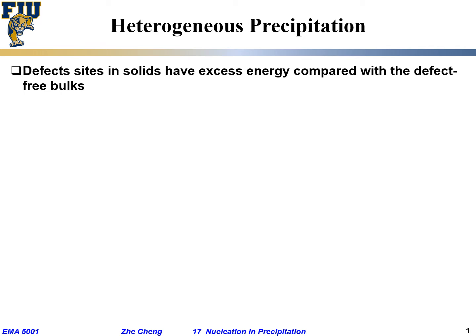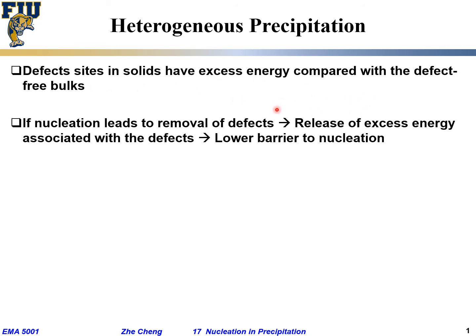From homogeneous nucleation, we quickly move to heterogeneous nucleation, which means the precipitate occurs not randomly or uniformly but at specific locations — often called defect sites — whether it's a grain boundary, gas bubble, or surface. Compared with a bulk perfect crystal, these are defect sites, and as we learned earlier, whether it's a grain boundary or dislocation, they all have excess energy. If nucleation happens at those specific defect sites, it may lead to removal or partial removal of the defect and release of energy.